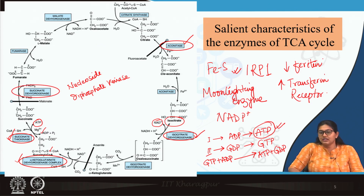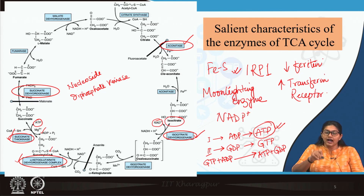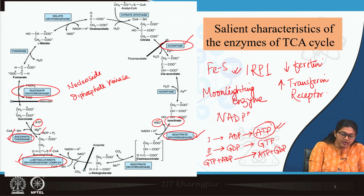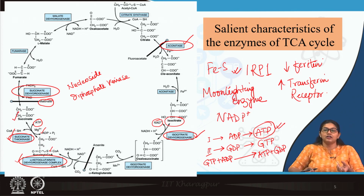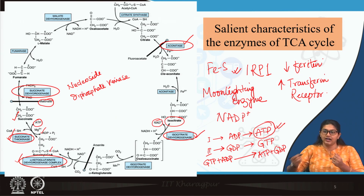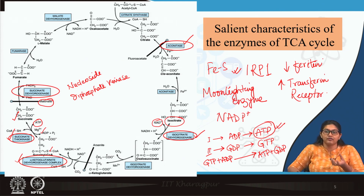Then succinate dehydrogenase. An important feature of succinate dehydrogenase is that it is the one enzyme of TCA cycle which is attached to the inner mitochondrial membrane; all other enzymes are present in the mitochondrial matrix. The inhibitor of succinate dehydrogenase is malonate, which is a competitive inhibitor and a structural analog of succinate — it competes with succinate to bind with the enzyme. Remember: malonate is the classic example of a competitive enzyme inhibitor.